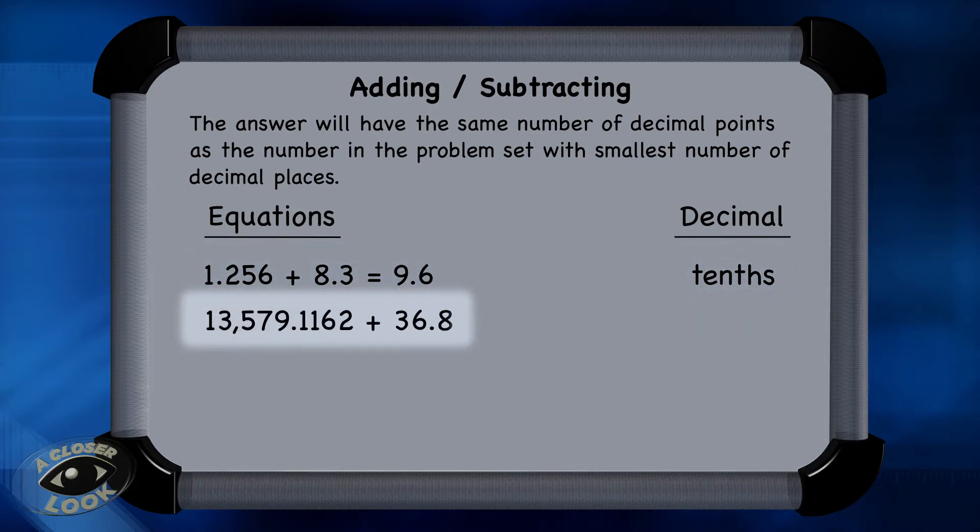In this example, there is a large value that's carried out four places past the decimal. But the second value, 36.8, is only carried one place, to the tenths place. So the answer has to be rounded to one place past the decimal.